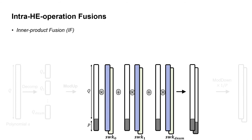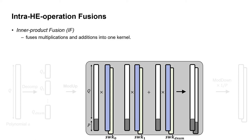The second fusion is inner product fusion. In the baseline implementation, there are multiplication kernels and addition kernels for multiplication with the key switching key. In this fusion, we perform all these kernels in a single fused kernel.